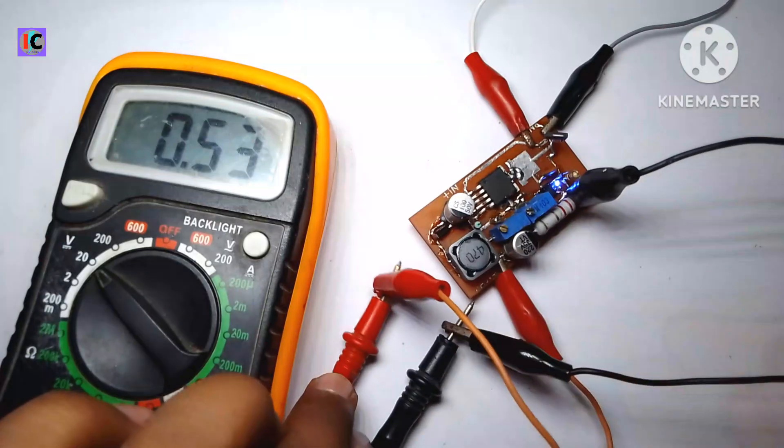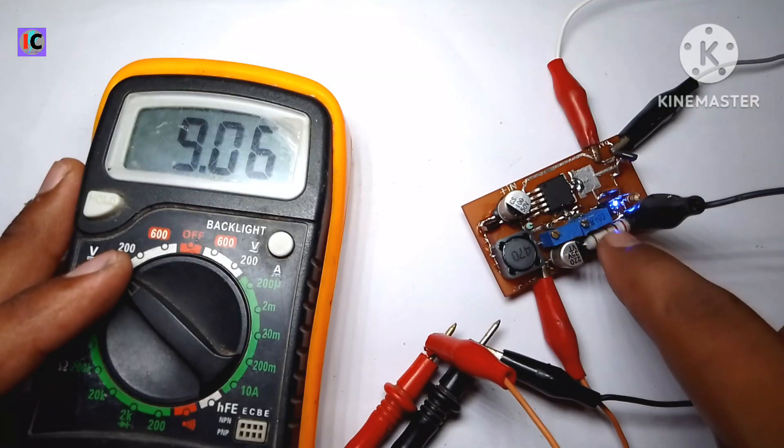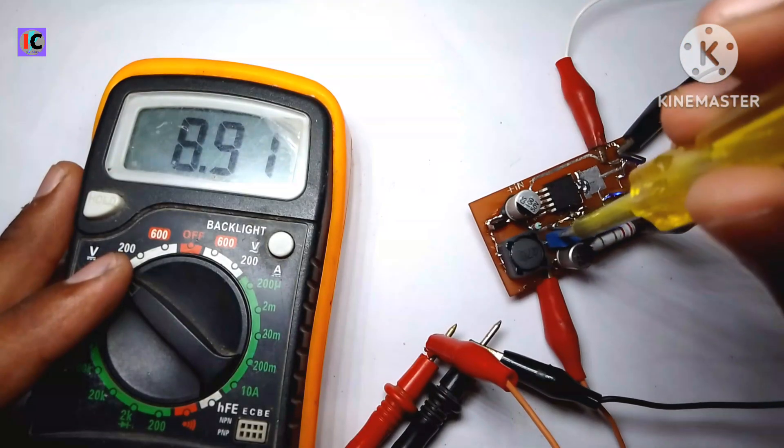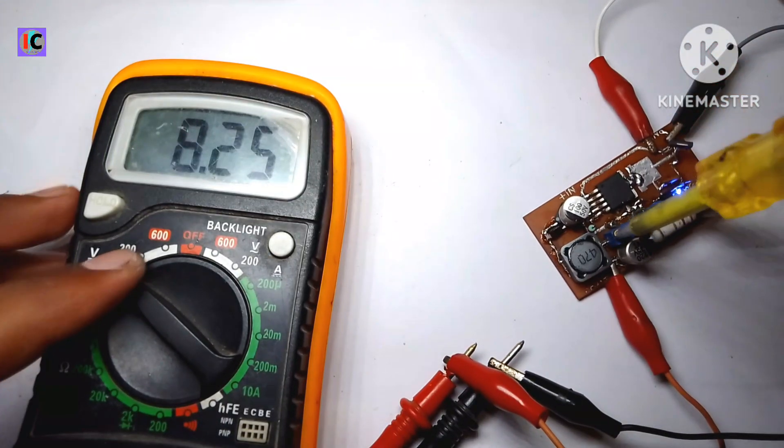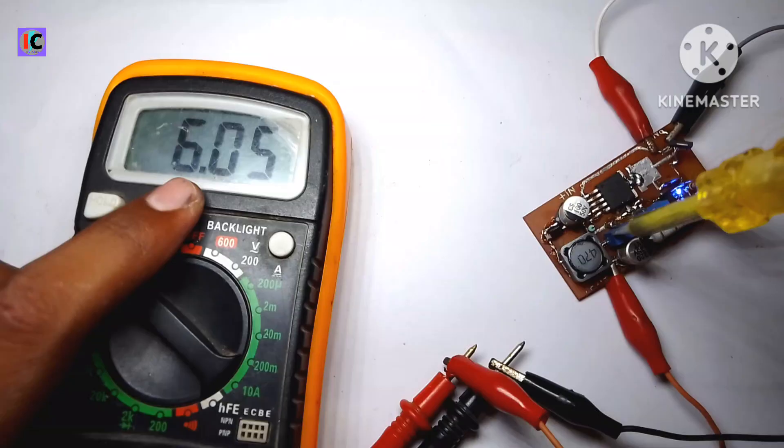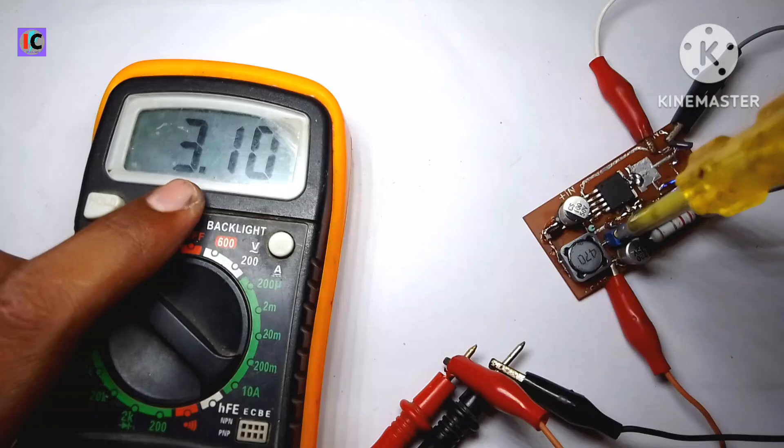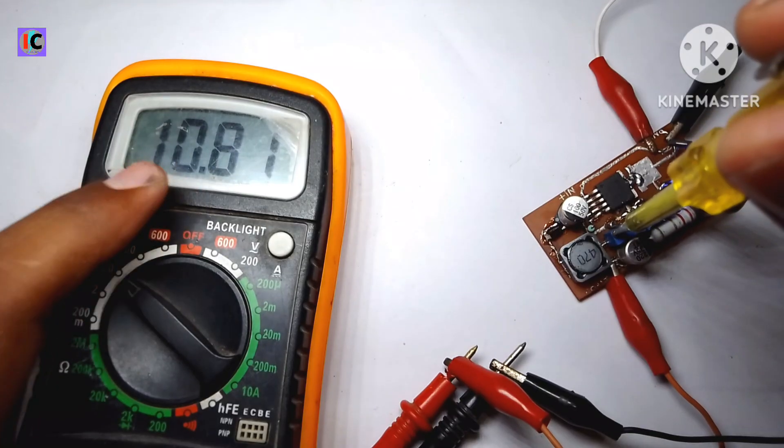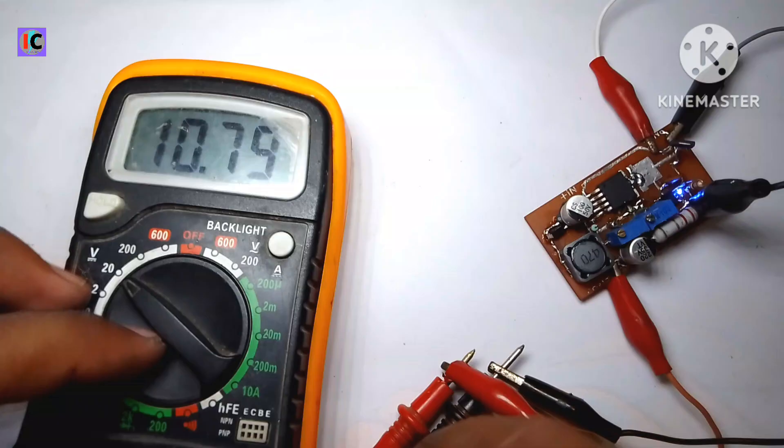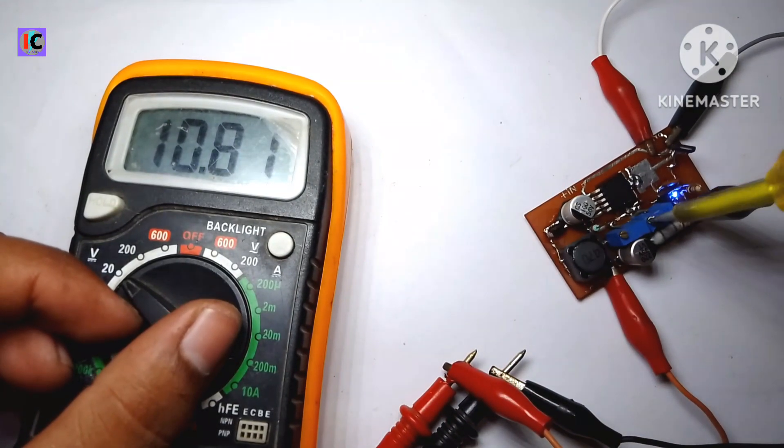Here the output voltage is 9 volts. We will adjust to this voltage for testing this module. As you can see, the voltage is dropping below to 1.4 volts. This is basically a buck converter so that we can control the output voltage below the given voltage. For example, if we give 12 volts at the input, we can get a maximum of 11 volts or something maximum.